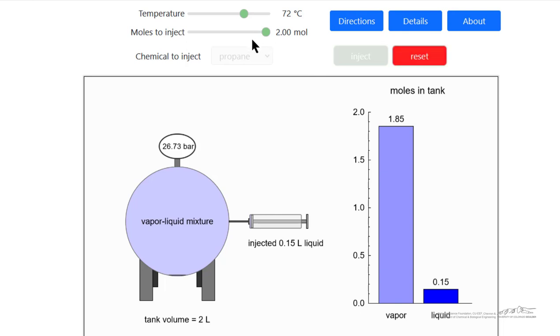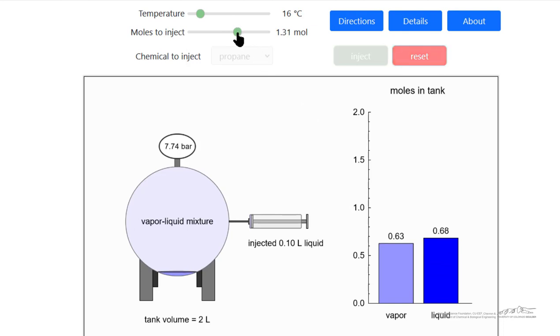Let me just go back and lower the number of moles. If I lower the temperature, we're at saturation condition now. Saturation pressure 7.74 bar is at 16 degrees C. If I inject more moles, it all goes into liquid phase, and then it actually starts to decrease the volume of the vapor phase slightly because the liquid, of course, occupies some volume.